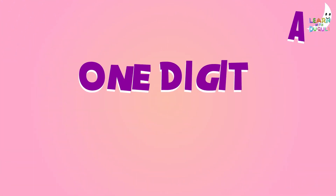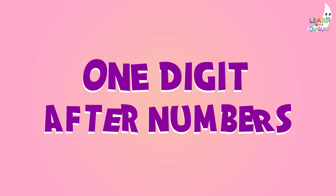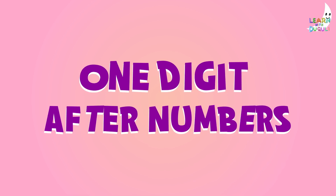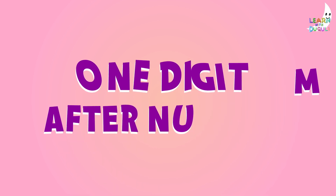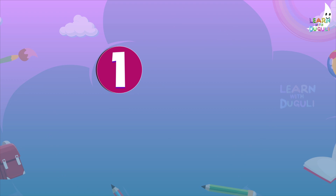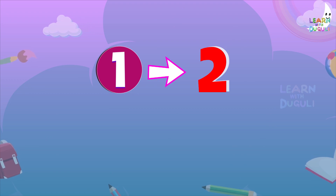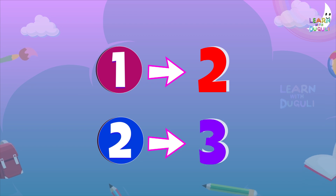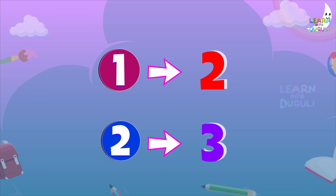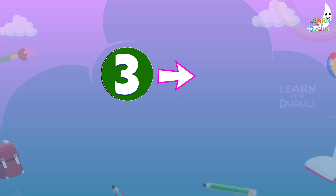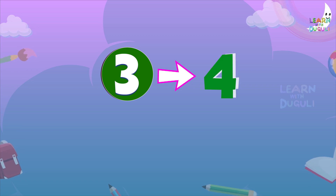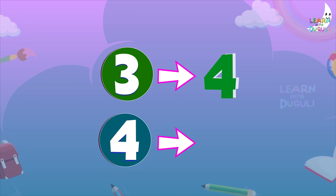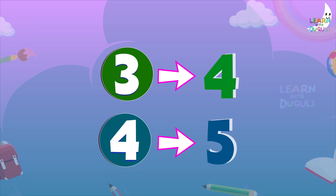One digit after number. One after number is two. Two after number is three. Three after number is four. Four after number is five.